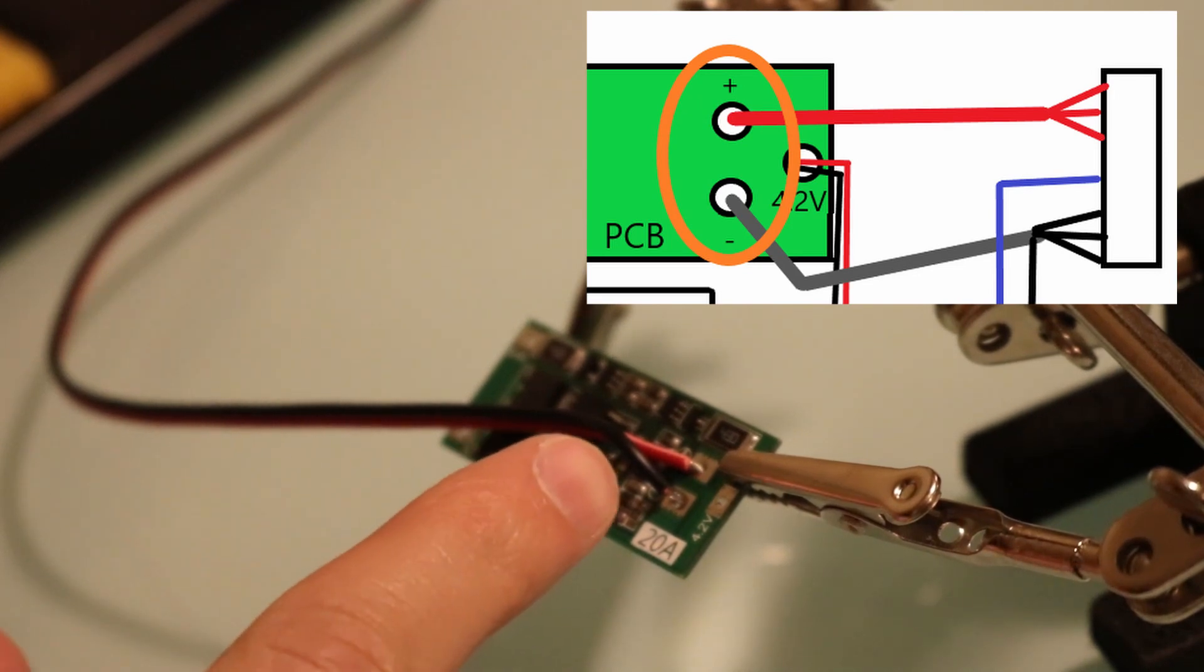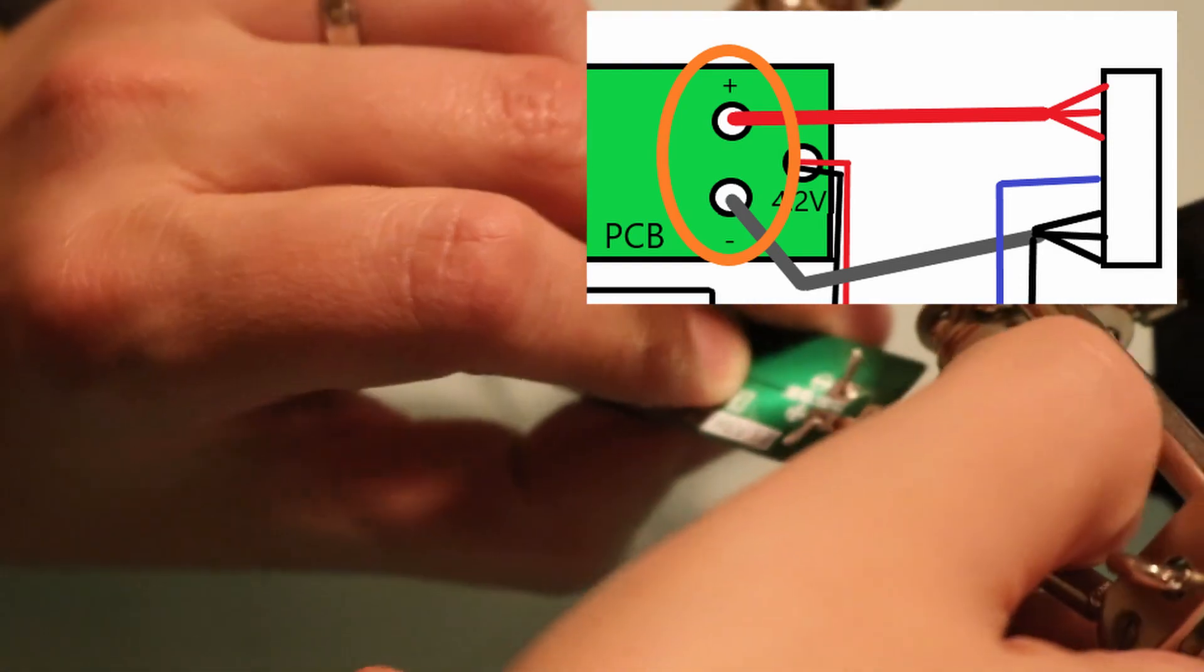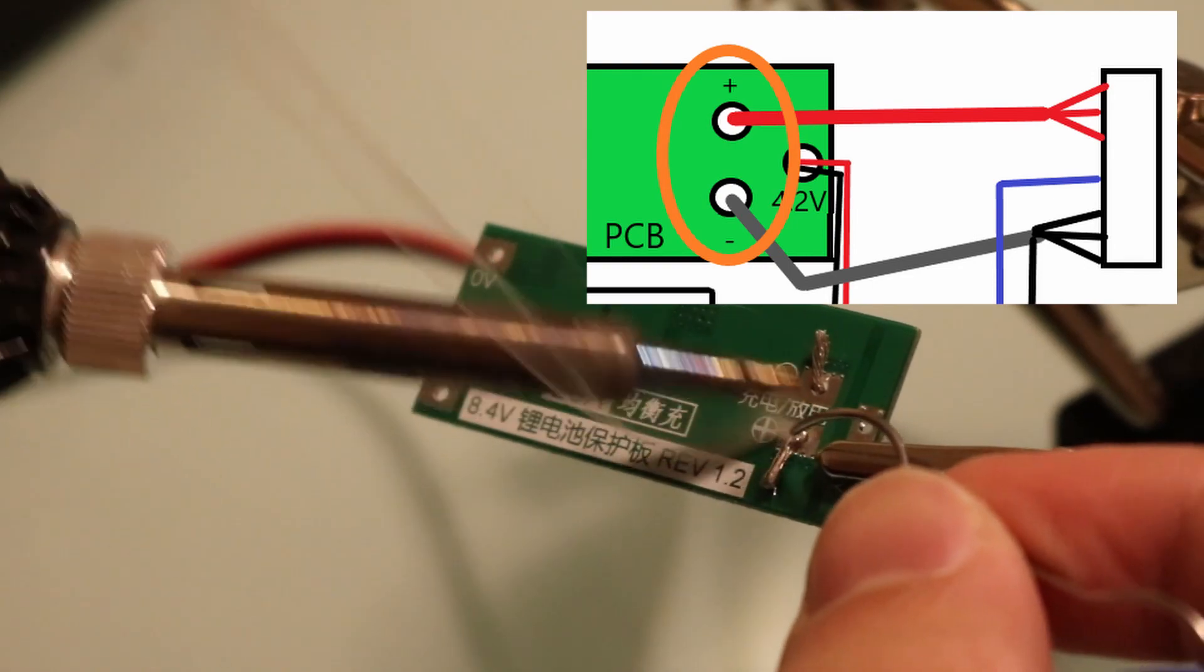I've got the ends of my 24 gauge wire stripped and I've got them passing through the holes for the positive and negative charging leads. I'm going to flip this over and I am going to solder them from the back side.